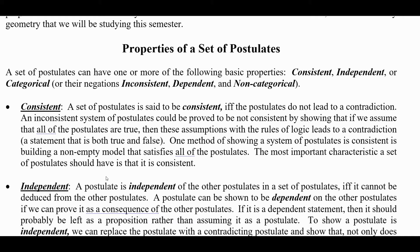Let's talk about the properties a set of postulates might have. A set of two, three, four, five, or more postulates taken together can have one or more of the following properties: they could be consistent, independent, or categorical — or their negations: inconsistent, dependent, and non-categorical. A set of postulates is consistent if and only if the postulates do not lead to a contradiction. An inconsistent set can be proved inconsistent by showing that assuming all postulates are true leads to a contradiction — some postulates say a statement is true while others say it is false, which is impossible.